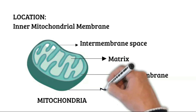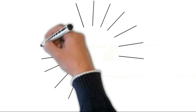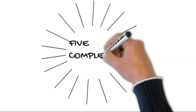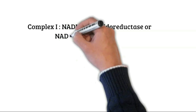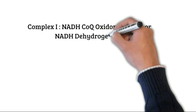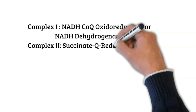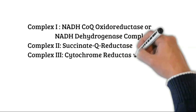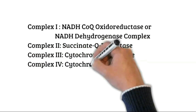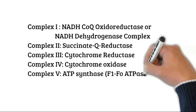The electron transport chain occurs in the inner mitochondrial membrane. To carry out the process, five complexes are involved: Complex I, also called NADH CoQ oxidoreductase or NADH dehydrogenase; Complex II, also called succinate Q reductase; Complex III, known as cytochrome reductase; Complex IV, known as cytochrome oxidase; and Complex V or ATP synthase, called F1F0 ATPase, where oxidative phosphorylation takes place.